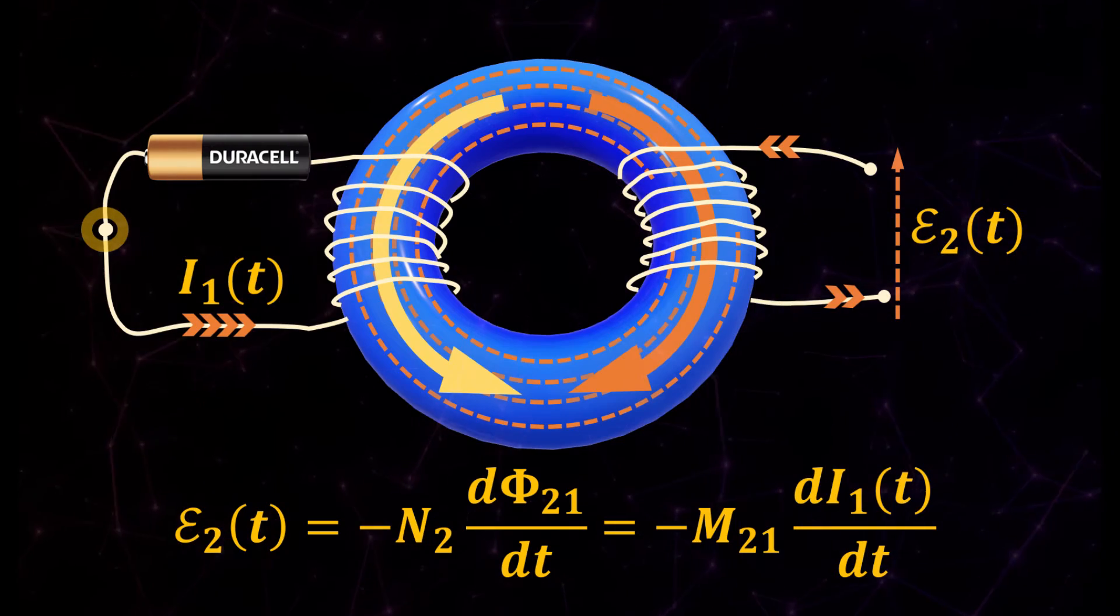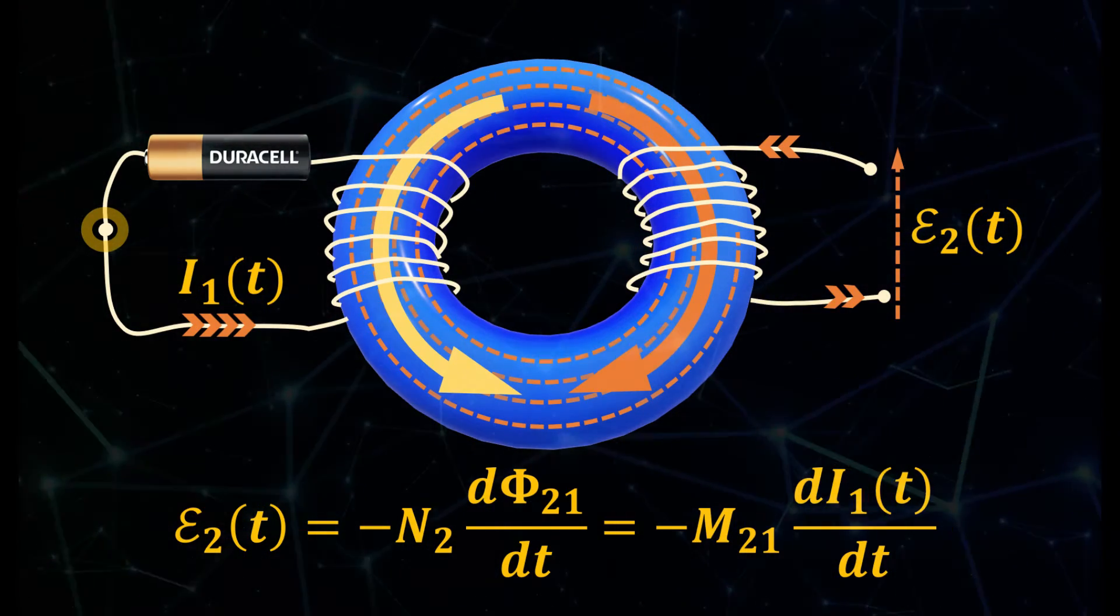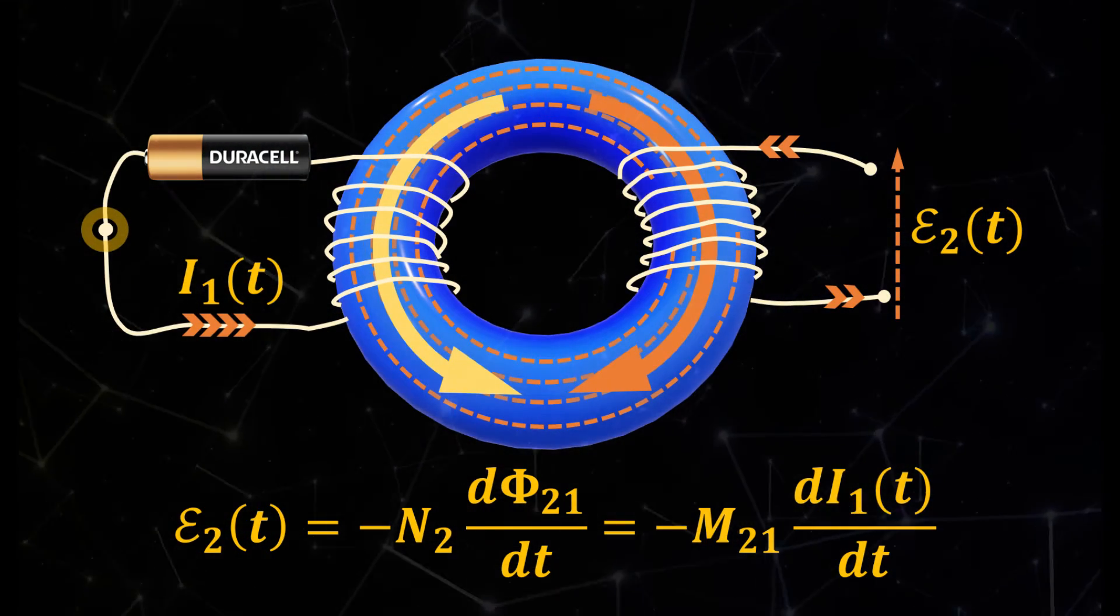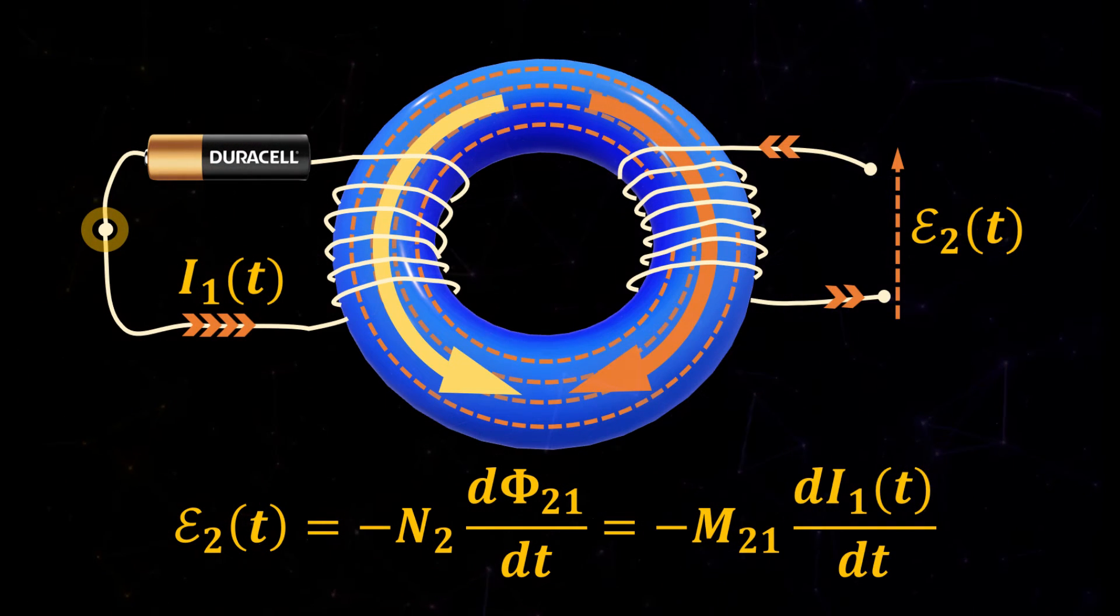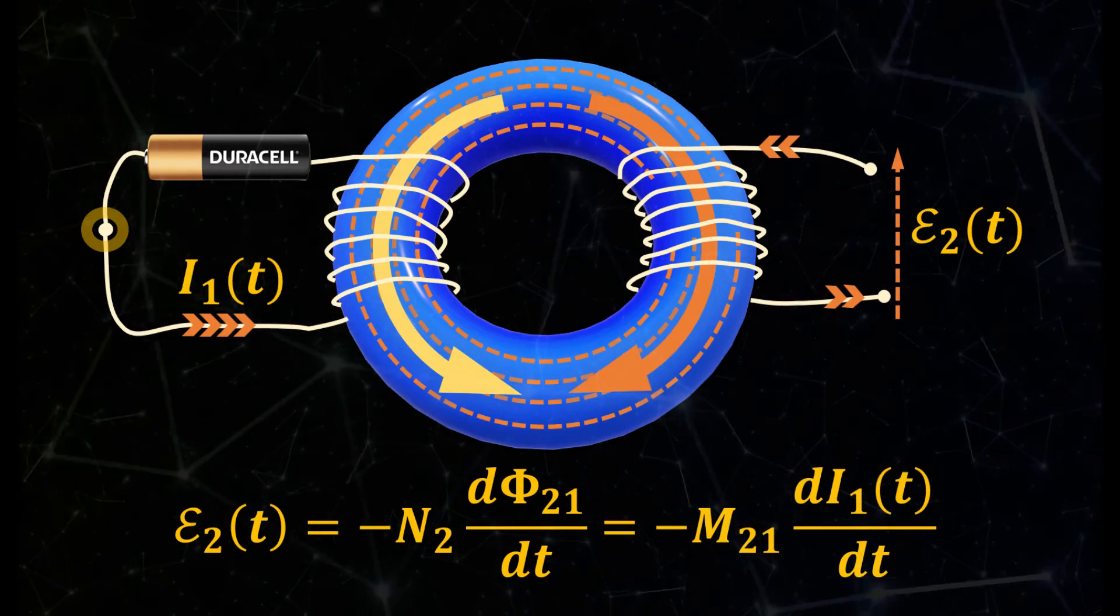Finally, combining both the Ampere's and Faraday's law allow us to express the electromotive force in terms of the rate of change of the applied current whose proportionality constant is known as the mutual inductance, herein denoted as M21.